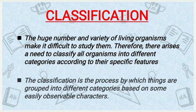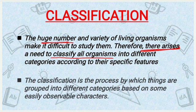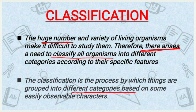The huge number and variety of living organisms make it difficult to study. Therefore, there arises a need to classify all organisms into different categories based on their specific features. Classification is the process by which things are grouped into different categories on some easily observable characters. Based on these easily observable characters, we divide or group all living things into categories.